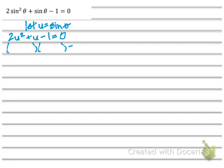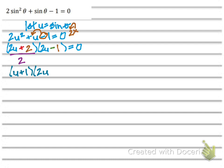That has to be factored before we can do anything with it. Two sets of parentheses with a 2u in each set. The sign in the first set is positive, the sign in the second set is negative. a times c: 2 times 1 is 2, so I'm looking for two numbers that multiply to give me 2 and subtract to give me 1 — that's 2 and 1, and the 2 goes in the first set. I have a common factor of 2 in the first set, so I'm left with (u plus 1)(2u minus 1) equals 0. If u plus 1 is 0, then u is negative 1. If 2u minus 1 is 0, then u is positive 1 half.